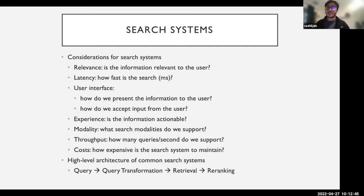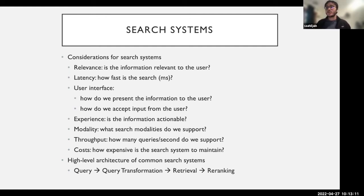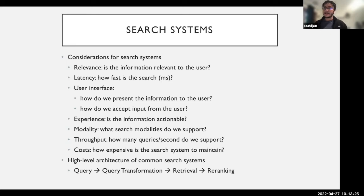One consideration is relevance — is the information relevant to the user? You'd want to benchmark and measure how relevant the information you're providing is. A second important consideration is latency, measured on the order of milliseconds. Google has trained all of us to expect search to be really fast. If you're above a second, that's often very slow for consumers. In general, we want to operate on the order of 100 to 600 milliseconds, though it depends on the use case.